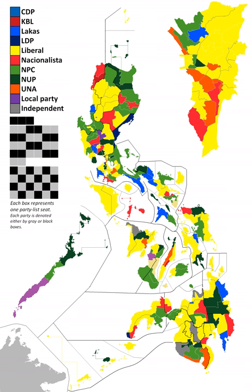These are the incumbents who are not running for a seat in the House of Representatives and are not term limited. Kaka Bagau is a party list representative for Akbayan who ran in Dinagat Islands District under the Liberal Party and won.